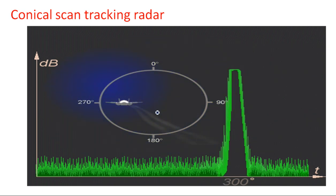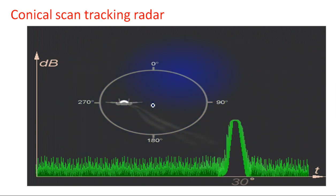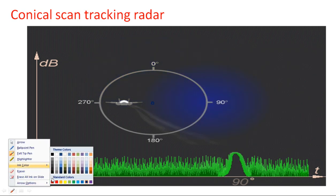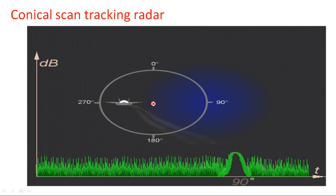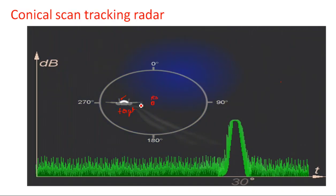Let us understand with respect to the diagram and animation. The radar system is located at the center and keeps rotating in a conical shape to identify the presence of a target. Assume the target is located at a particular position — the blue line shows the conical shape in which the radar antenna plate is rotating to identify the target.